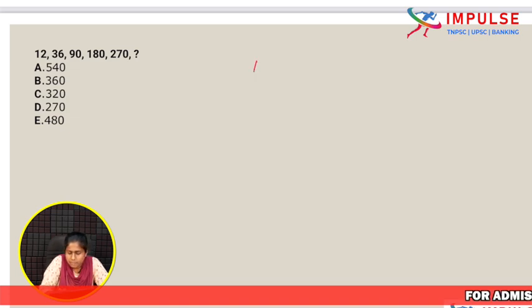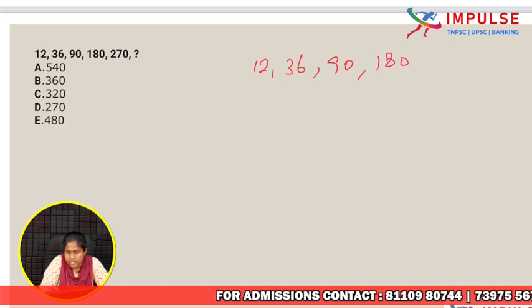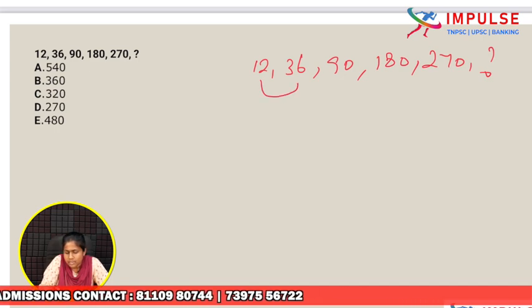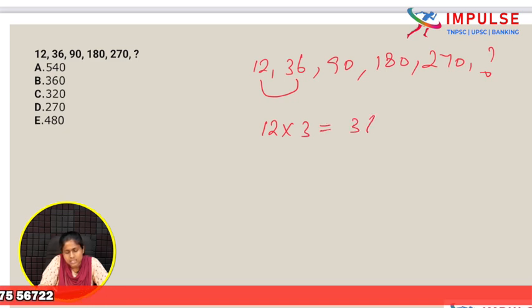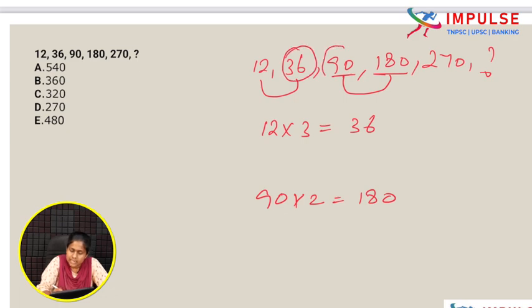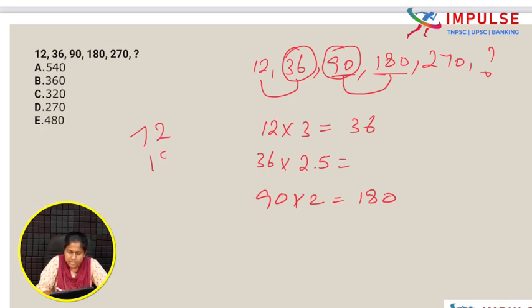Next question: 12, 36, 90, 180, 270, ?. Looking at the pattern: 12 × 3 = 36. Then 36 × 2 = 72, and 90 × 2 = 180. The differences and multipliers are being examined to find the next number in the sequence.